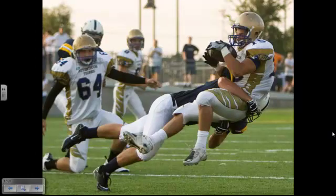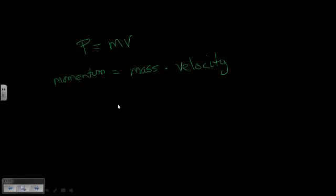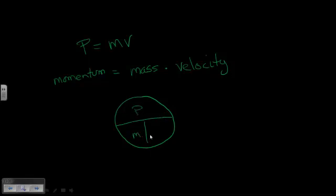It's often easier to explain Newton's third law through momentum. The formula for momentum is P = mv. The P stands for momentum — we use P because M is already used for mass, and V is velocity. Just like F = ma, you can rearrange: velocity is P over M, or mass is momentum over velocity. Mass is typically in kilograms and velocity in meters per second, so the unit for momentum is kilograms times meters per second. This formula will help us explain Newton's third law in more detail.